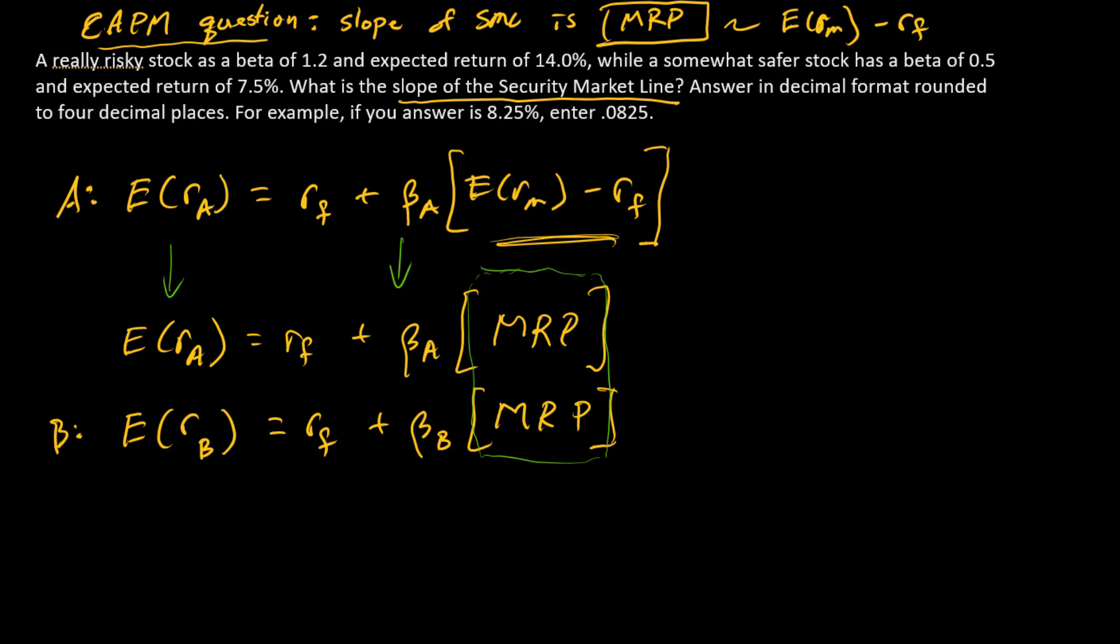Now looking at this algebraically, what do we have? Well, we just have two equations and two unknowns. We got two equations, two unknowns. And what are the unknowns? The risk free rate and the market risk premium. So we can solve these two equations by substitution. So again, we're after the market risk premium.